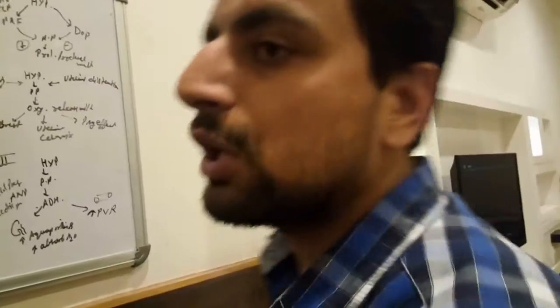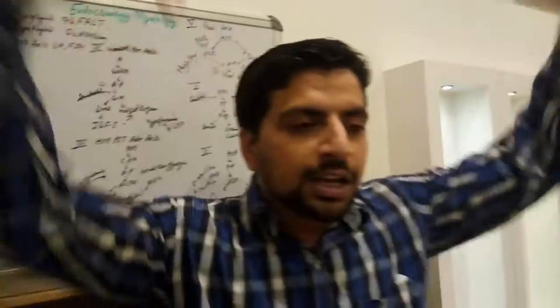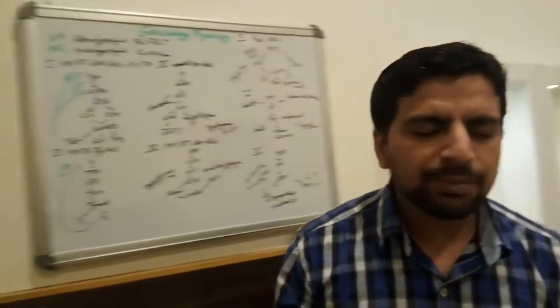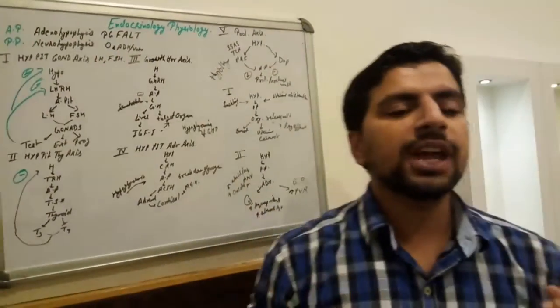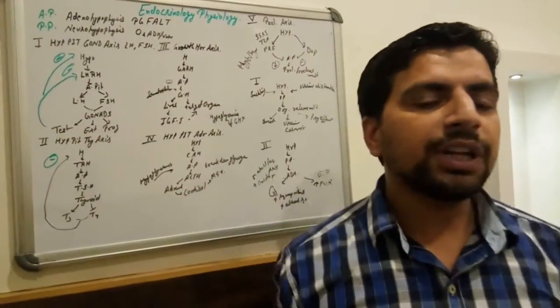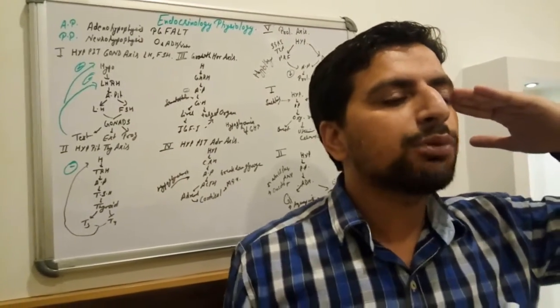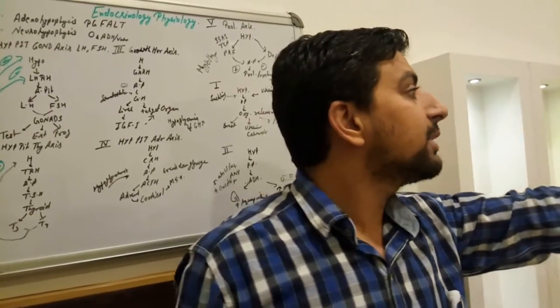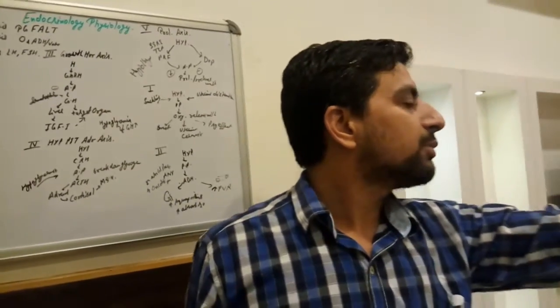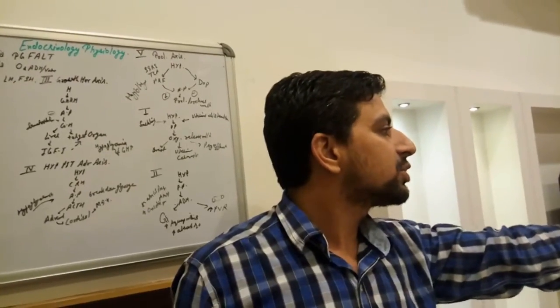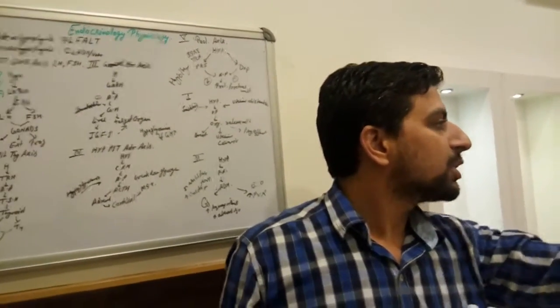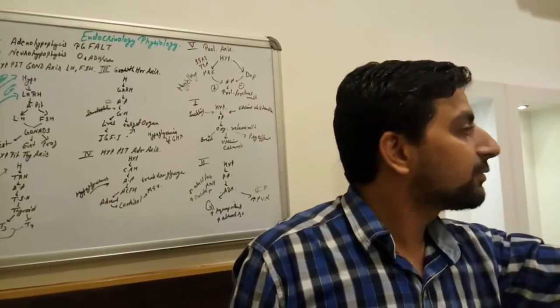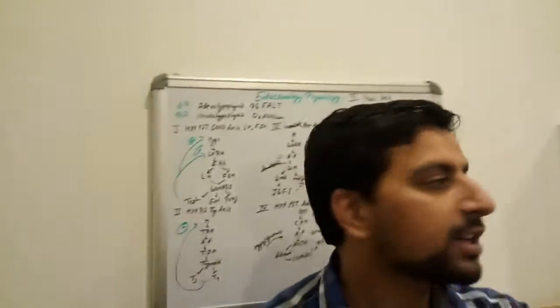This is all about the anterior pituitary. My dear friends, let's revise quickly. Think about the thyroid: start with the hypothalamus — which weighs only 4 grams, like a piece of our nail. Then the hypothalamus-pituitary-thyroid axis: hypothalamus releases thyroid releasing hormone to the anterior pituitary, which stimulates the thyroid gland.